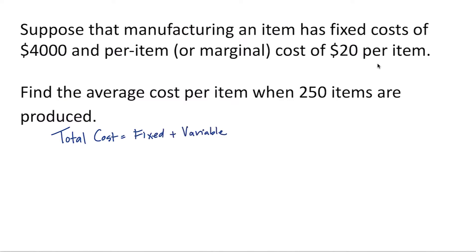So for our function C(Q), our fixed cost was $4,000 and our per-item cost or our marginal cost was $20 per item. So our variable cost would be $20 times Q, where Q is the number of items produced.